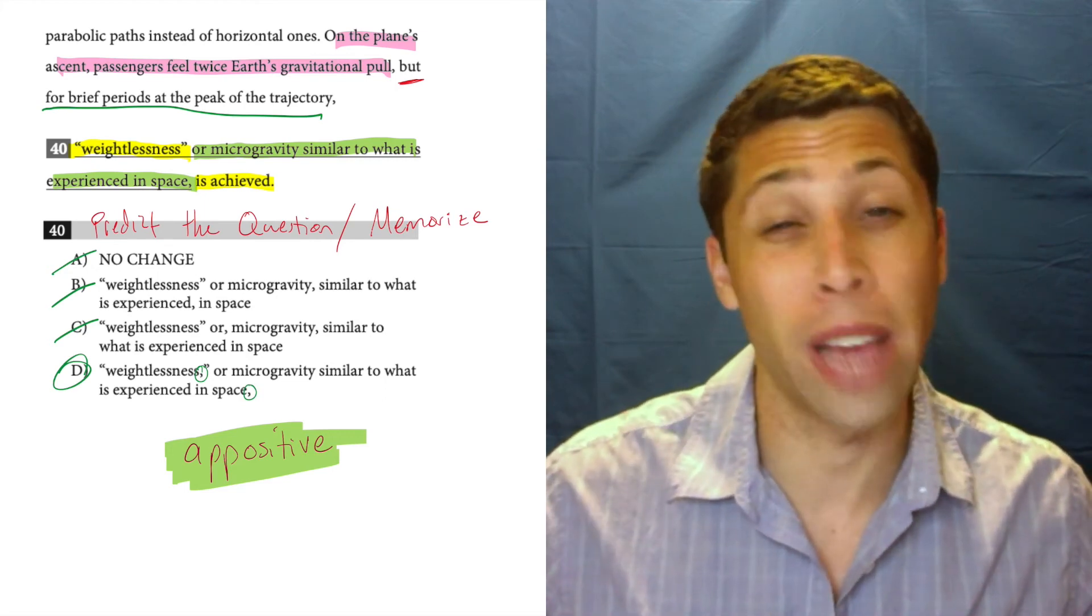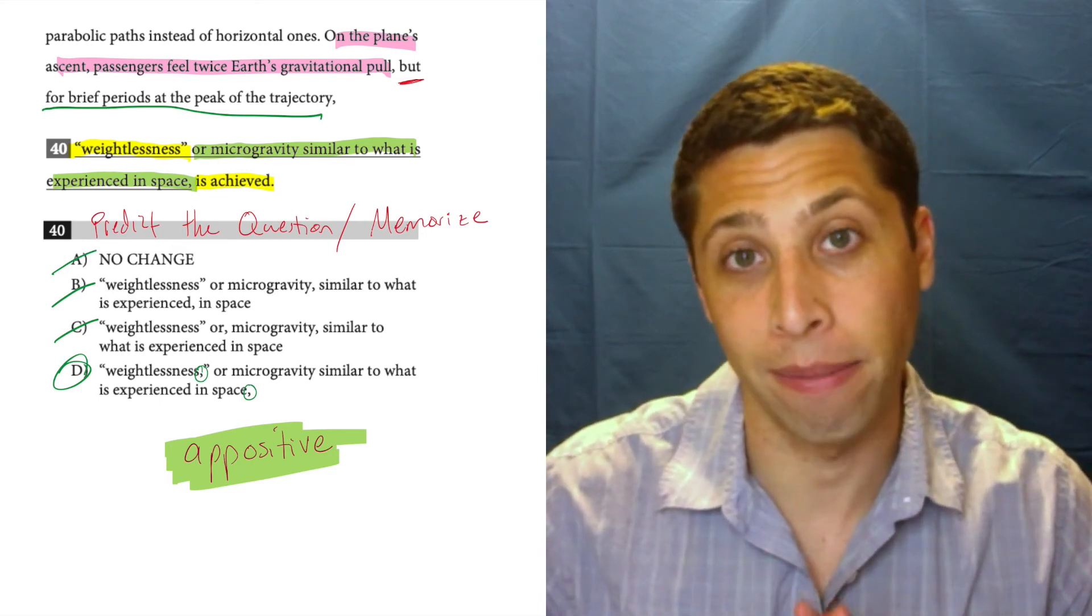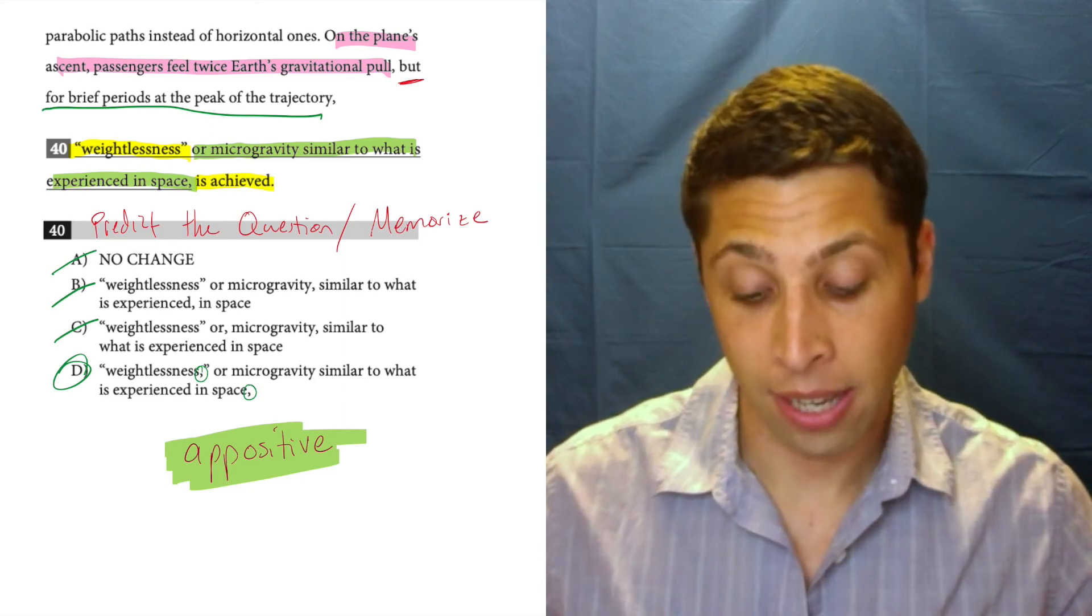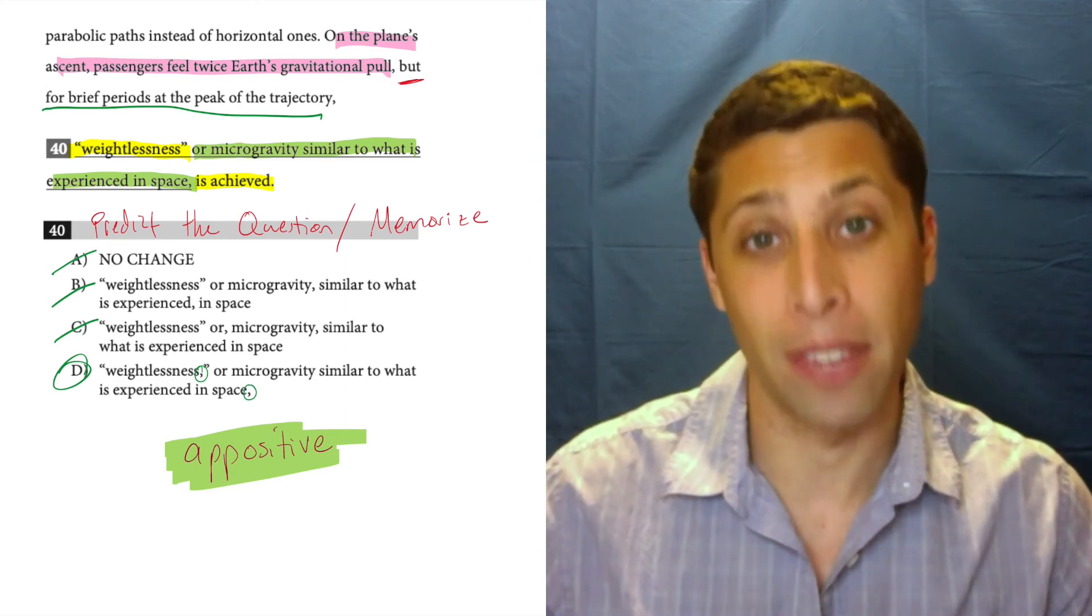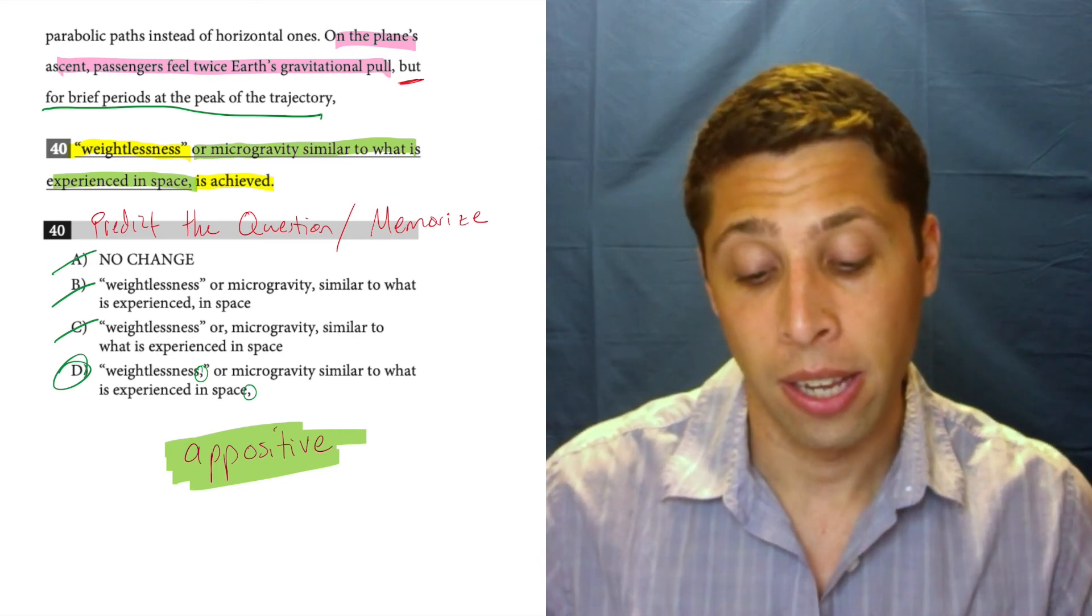And that in this case is done by two commas. Sometimes we do it with two dashes, but more often with two commas. And that's why we have the comma after weightlessness. It has nothing to do with the quotes, nothing. It's entirely because of the appositive and the interruption that we need to show our readers. It's tricky.